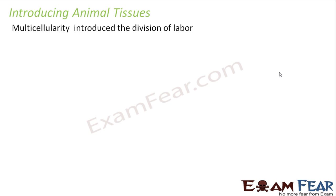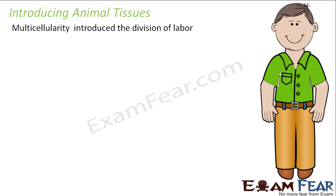As mentioned in the introduction of this lesson, multicellularity introduced the division of labor. Multicellular organisms are made up of millions of cells, so the question was how these cells perform specific functions. The cells group together and perform a specific function — this is known as division of labor, where the entire work is divided among groups of individuals, each assigned a specific task. This division of labor forms the basic concept of tissues.